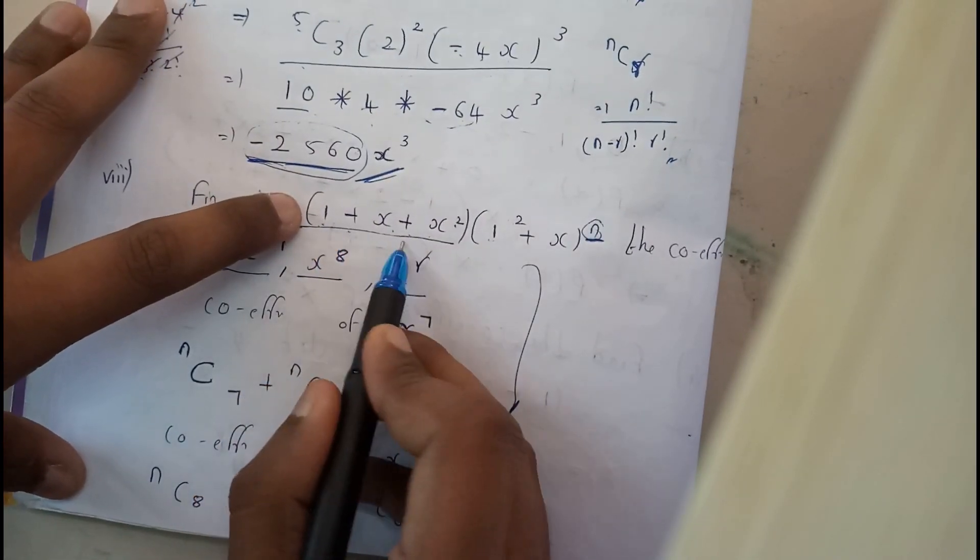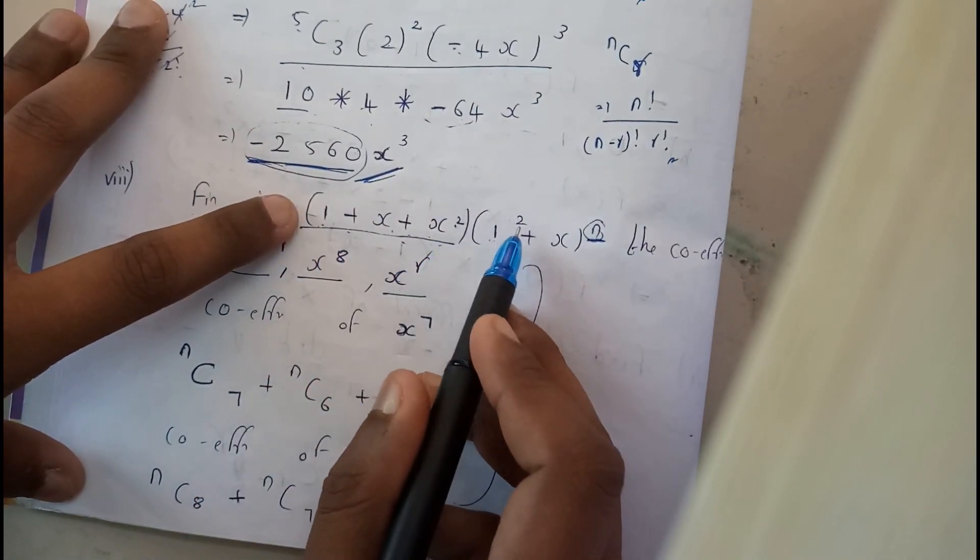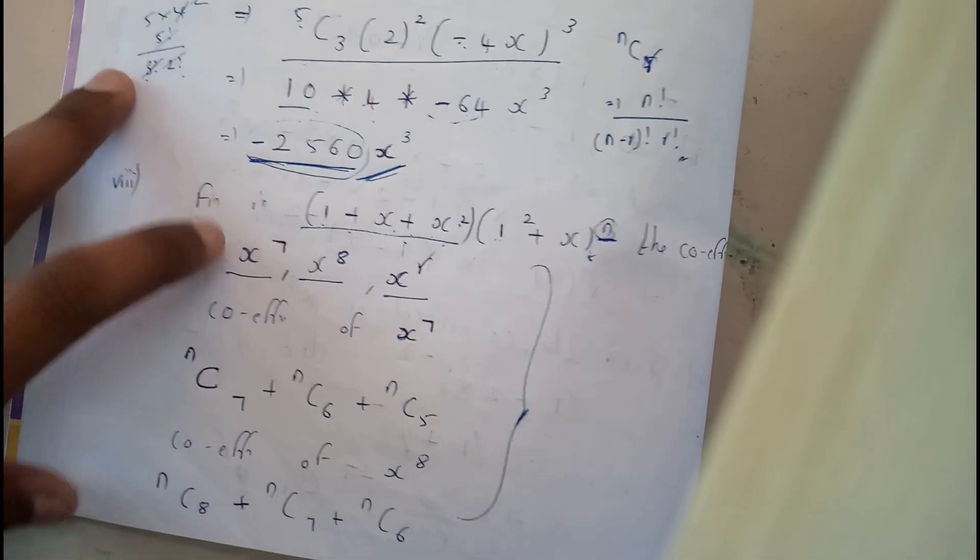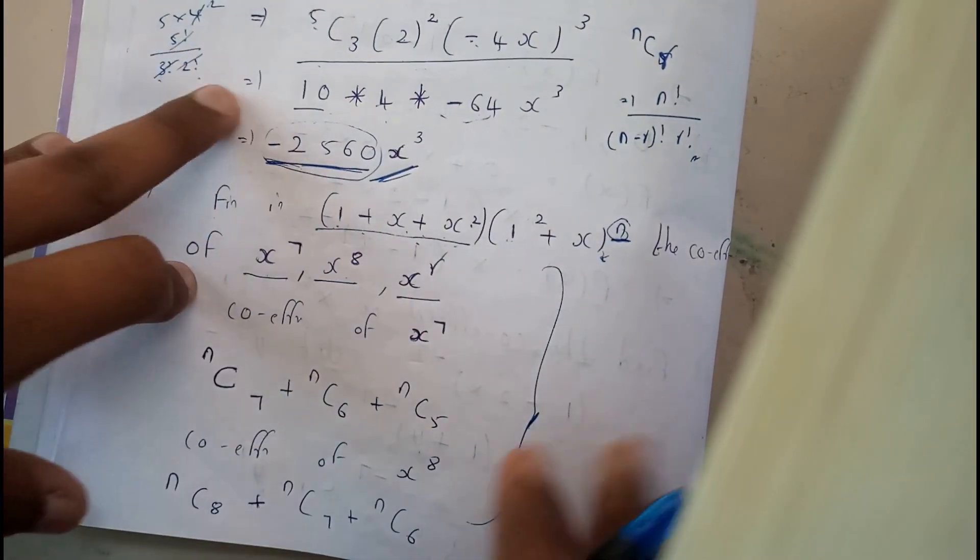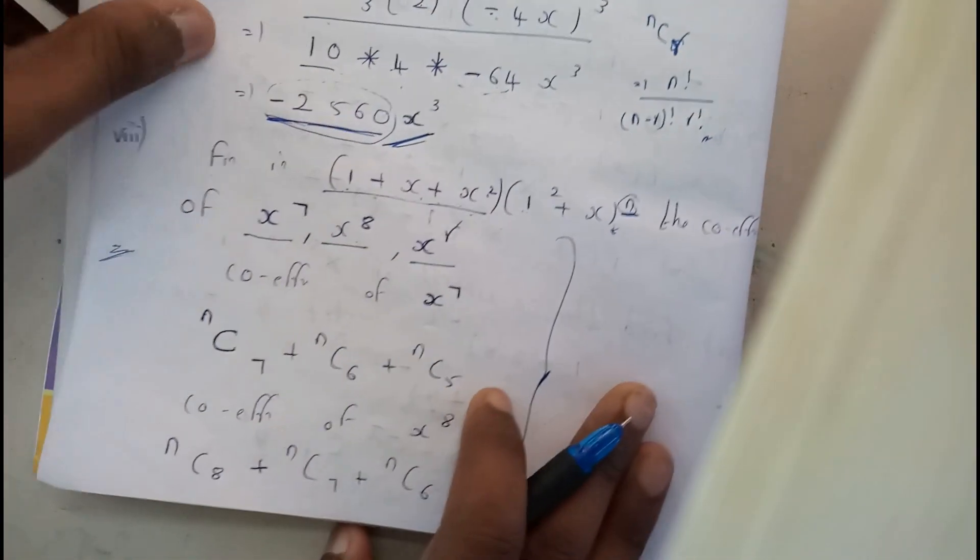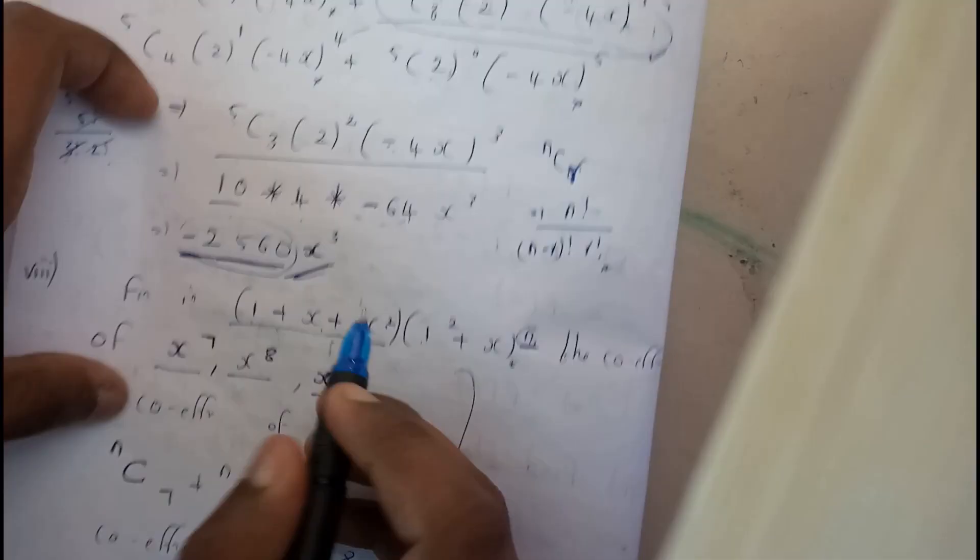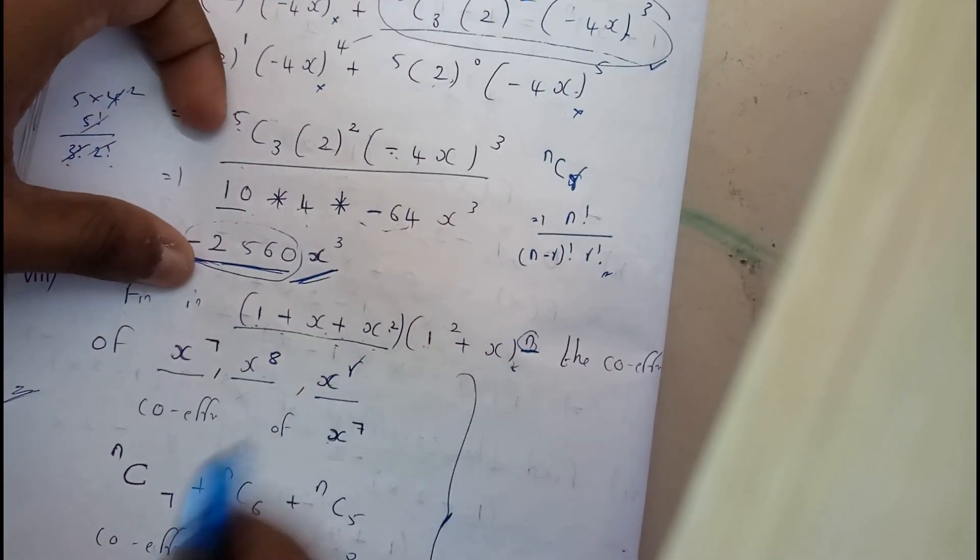If he gave 1 plus x plus x square into 1 plus x whole power N, he told you find the coefficient of x power 7 and x power 8 and x power r. So, let us continue. x power 7.